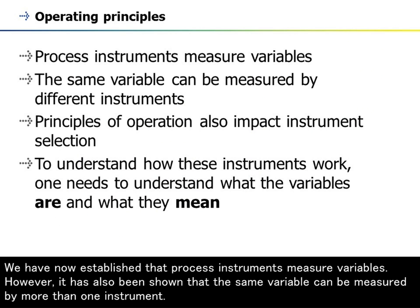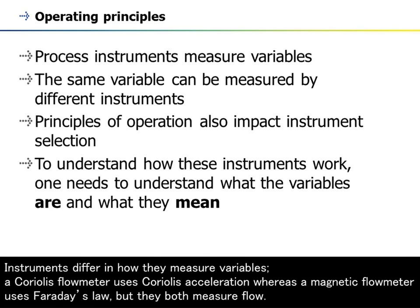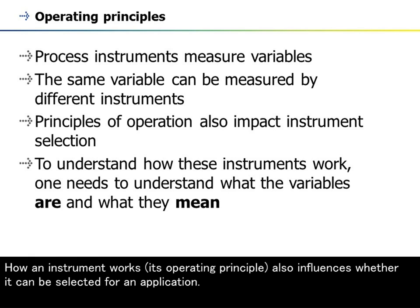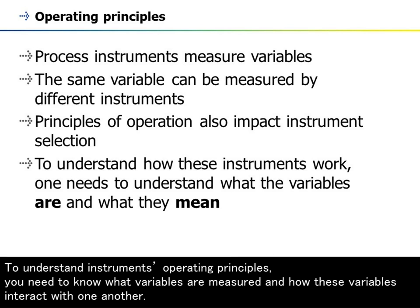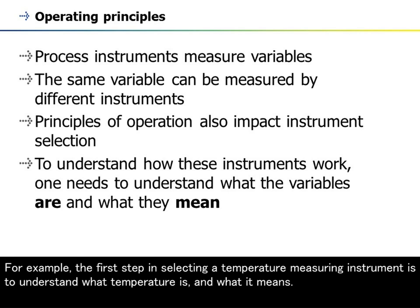We have now established that process instruments measure variables. However, it has also been shown that the same variable can be measured by more than one instrument. Instruments differ in how they measure variables — a Coriolis flow meter uses Coriolis acceleration whereas a magnetic flow meter uses Faraday's law, but they both measure flow. How an instrument works, its operating principle, also influences whether it can be selected for an application. To understand instruments' operating principles, you need to know what variables are measured and how these variables interact with one another. For example, the first step in selecting a temperature measuring instrument is to understand what temperature is and what it means.